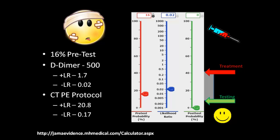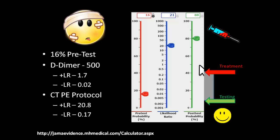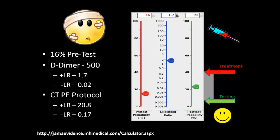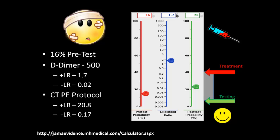What if we did a CT? The positive likelihood ratio of a CTPE protocol is almost 21, which gives us an 80% post-test probability of a pulmonary embolism, so we should go ahead and treat Bob. If we have a negative CTPE protocol, it has a negative likelihood ratio of 0.17, which leaves Bob at still having a 3% chance of having a PE. That's under our 5% testing threshold, but it does not make us as confident as a negative D-dimer. We can see how these likelihood ratios show us which tests will most help us decide — in this case, the CTPE protocol will be the most definitive test.